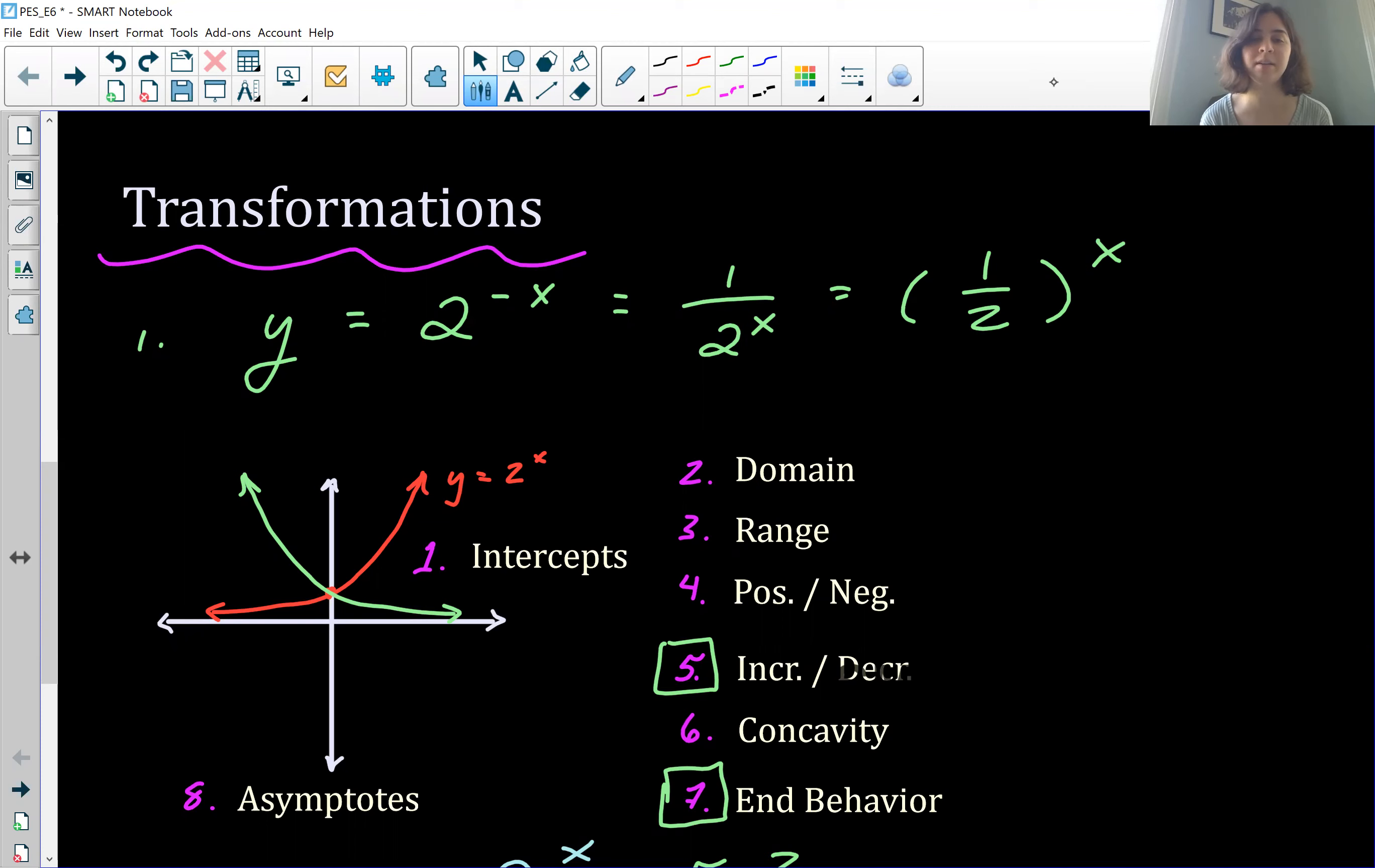So for the first one here, if we had a negative sign in front of the x, one property of exponents is that you can just do basically one over, or the reciprocal, and that will get rid of the negative sign.